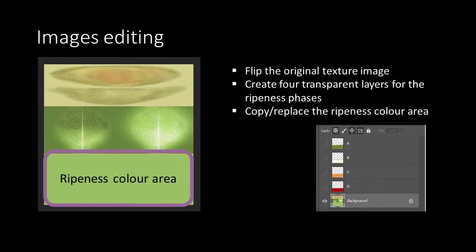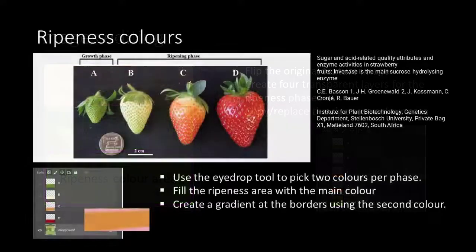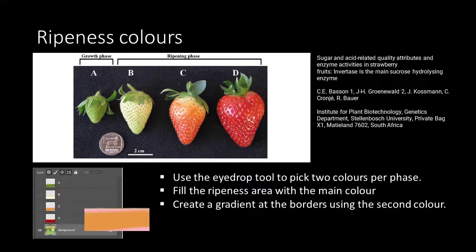This example is made using Photoshop, but with other programs you should be able to come to more or less the same result. The color in each layer is the result of a gradient — in the middle the main color and on the edges a variant. The colors are taken with a color picker from an image from a study on the ripeness phases of a strawberry.